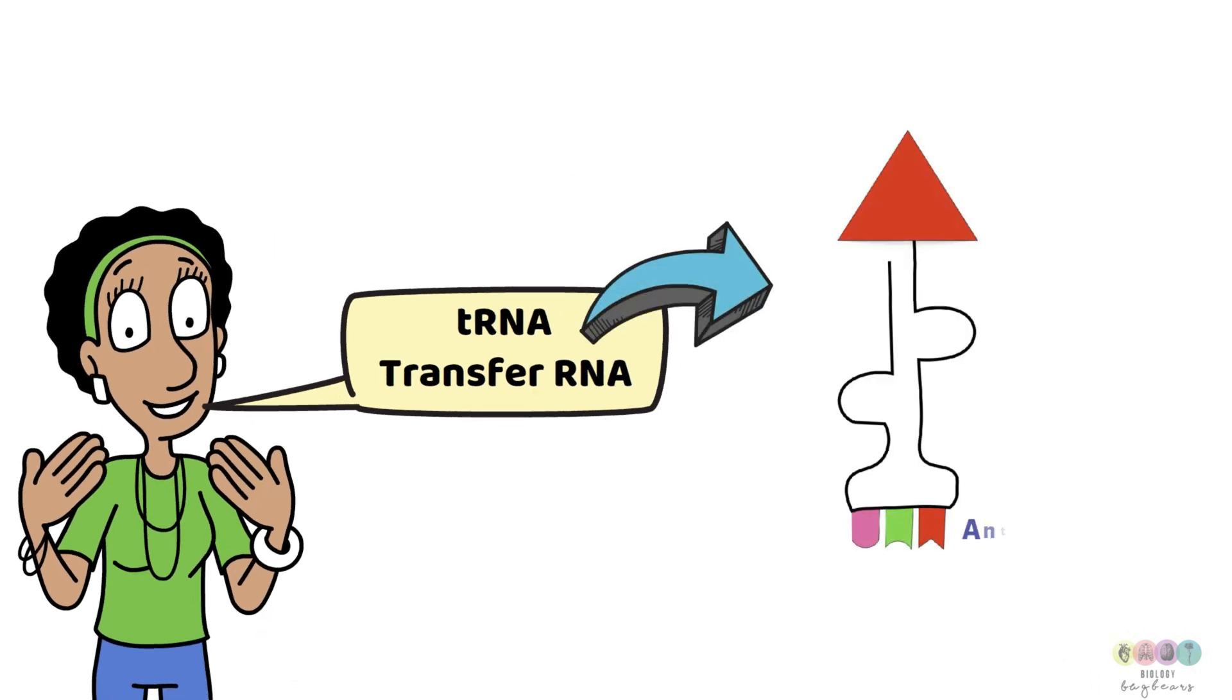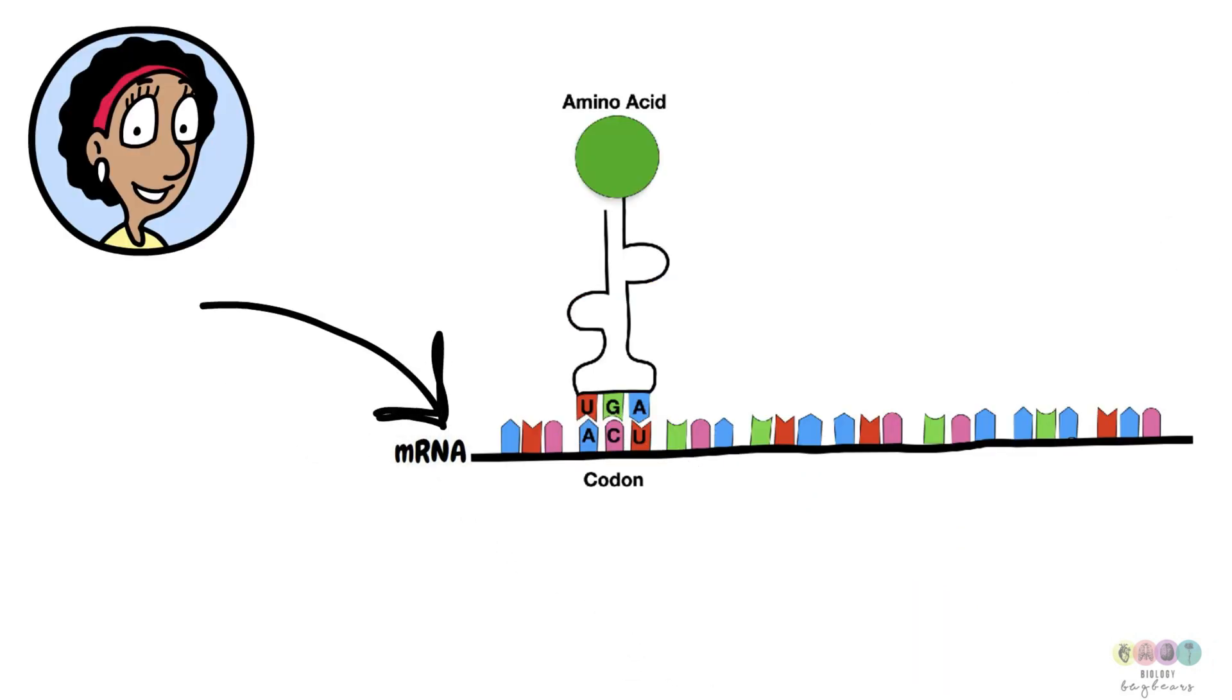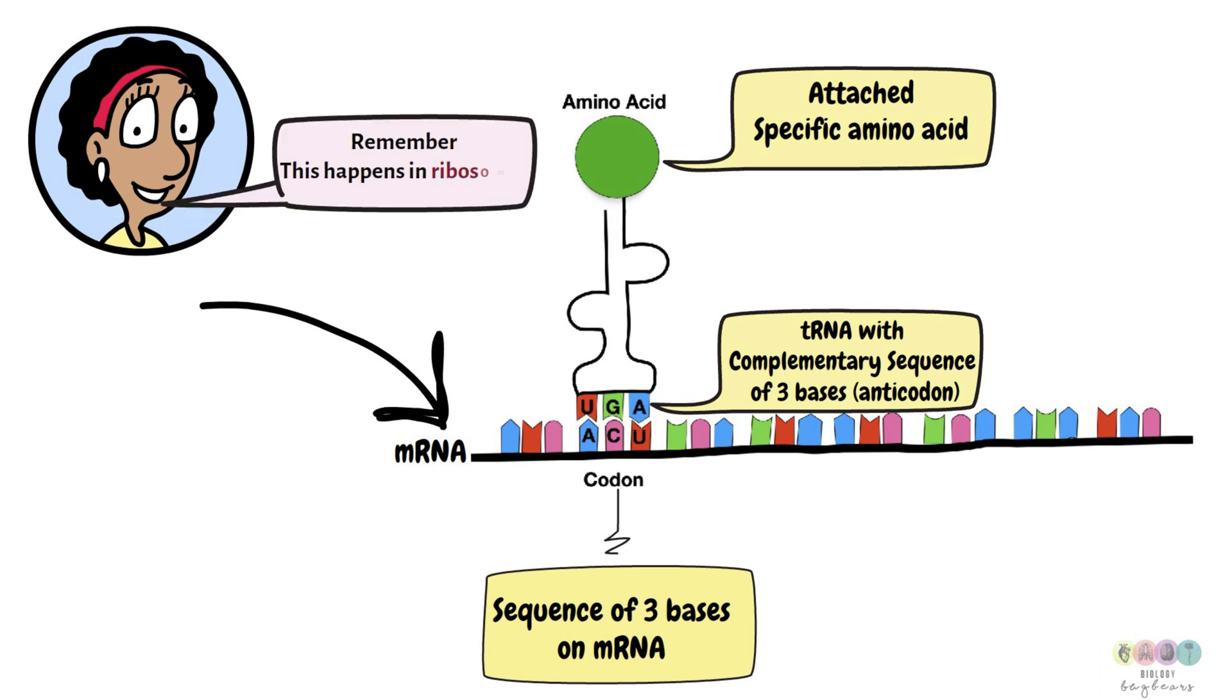So imagine that this is a transfer RNA, a transfer RNA molecule. At the end of one end of it is an anticodon. It's a sequence of three bases. And at the other end is a specific amino acid that it's carrying or transferring. So this is the messenger RNA. And on the messenger RNA are sequences of three bases. These are known as codons. For each of the codons, there will be a complementary anticodon. There will be a transfer RNA molecule that has three bases that are complementary to the messenger RNA. And attached to that transfer RNA molecule will be the specific amino acid.